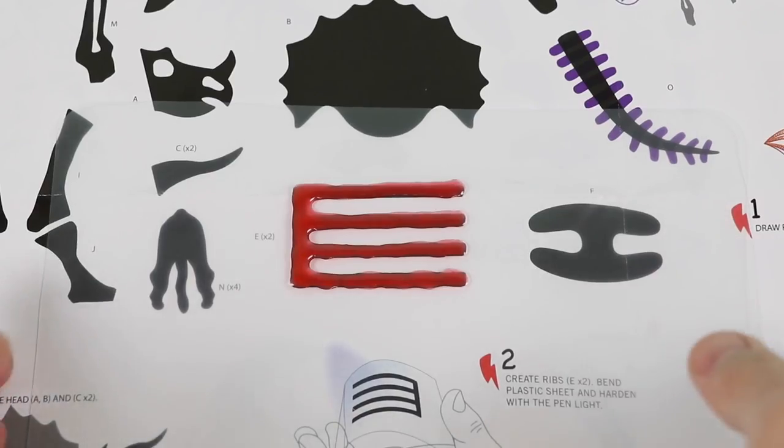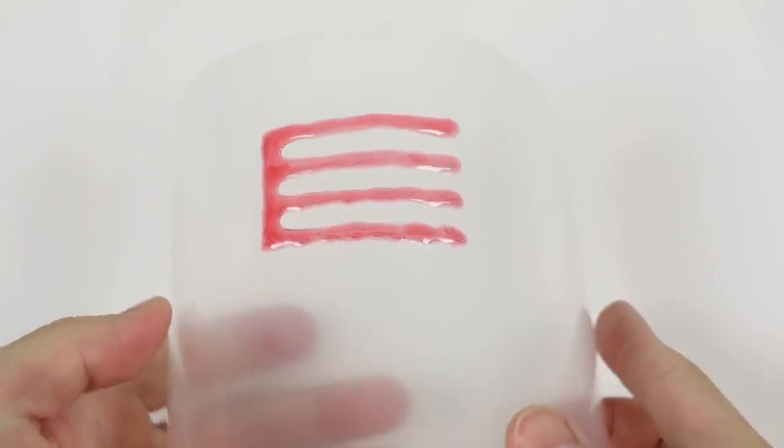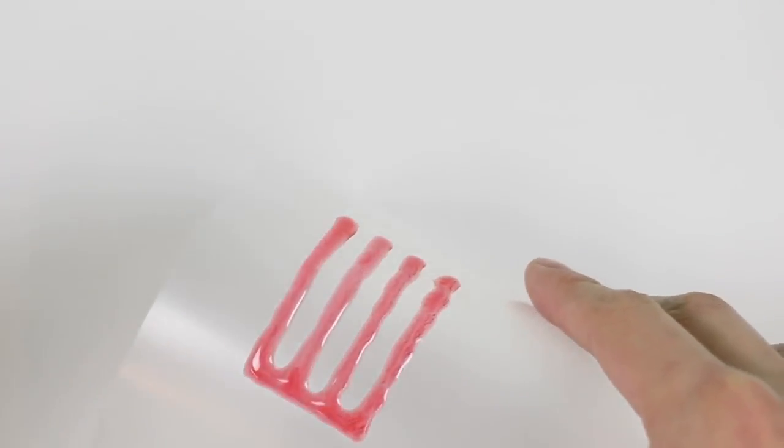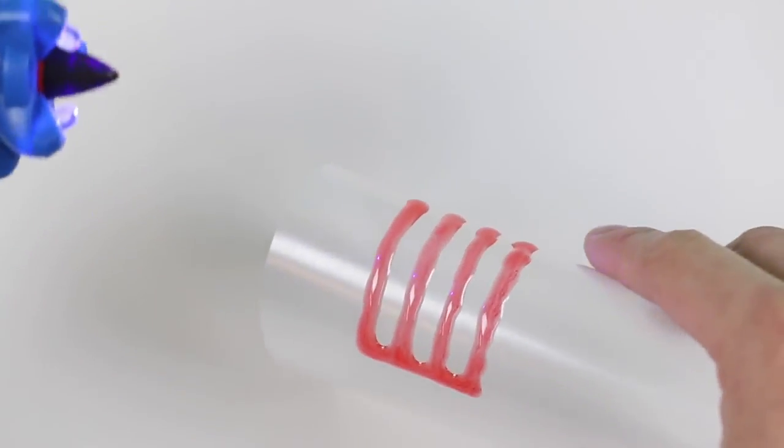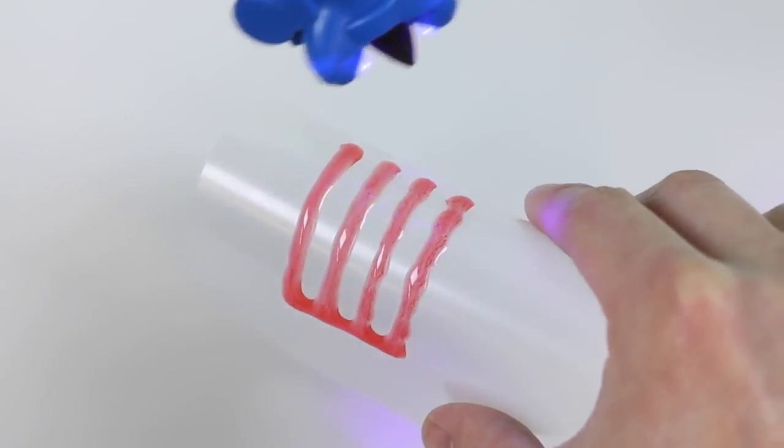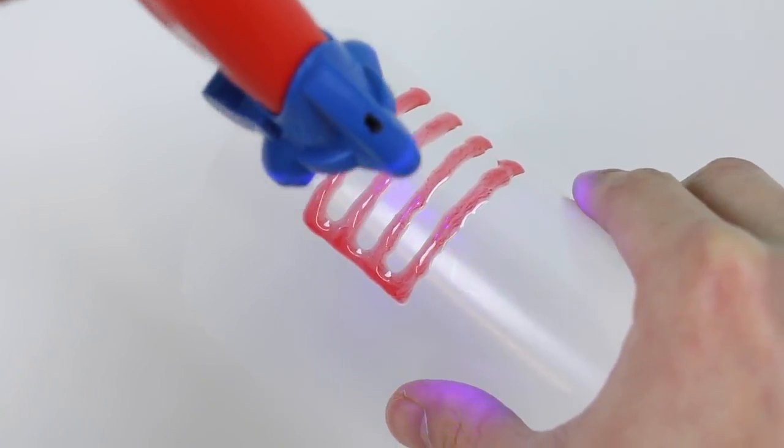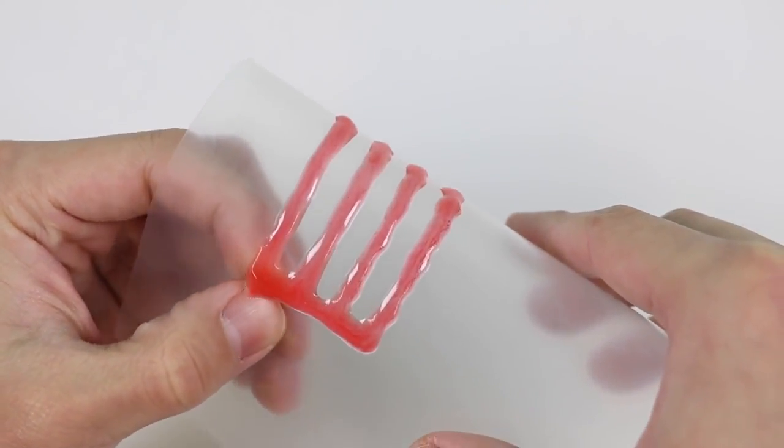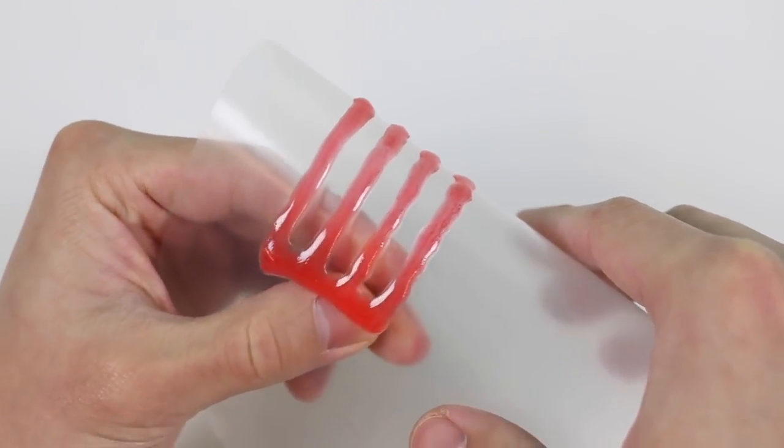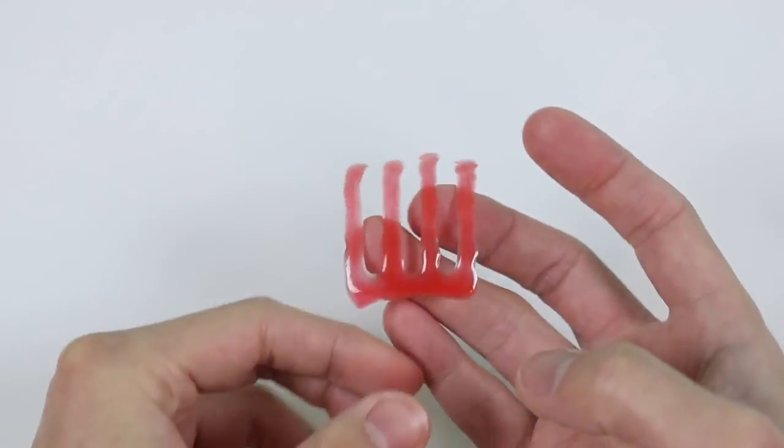Next step! Alright, I filled out the Triceratops' ribs, but we have one more step to do. Form the sheet so that the body is curved, and then use the light to harden it. When it's completely hardened, take it off the sheet, and it should be curved. Yes! Perfect!